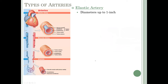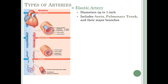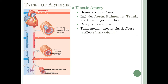Now let's look at the three major types of arteries: elastic arteries, muscular arteries, and arterioles. Elastic arteries are the big ones — diameters up to one inch wide. These include your really big arteries like the aorta and pulmonary trunk and their major branches, such as the right and left pulmonary arteries, and the first three branches off the aorta: the common carotid, subclavian, and brachiocephalic trunk. These carry large volumes of blood.